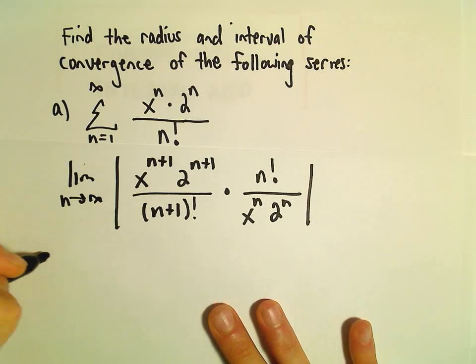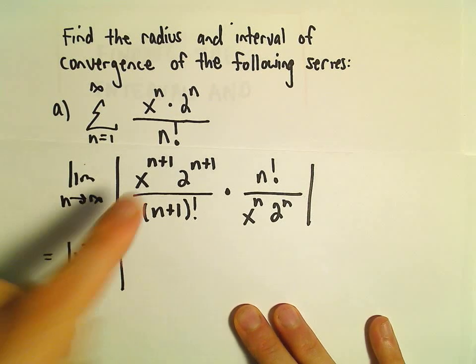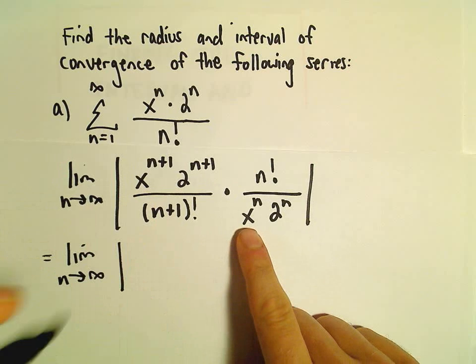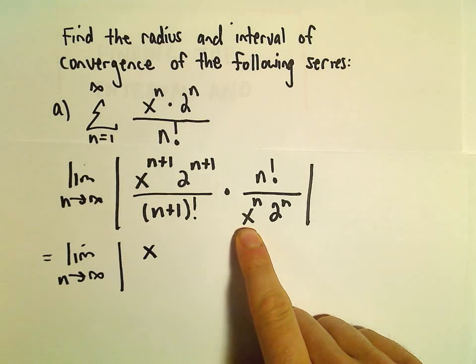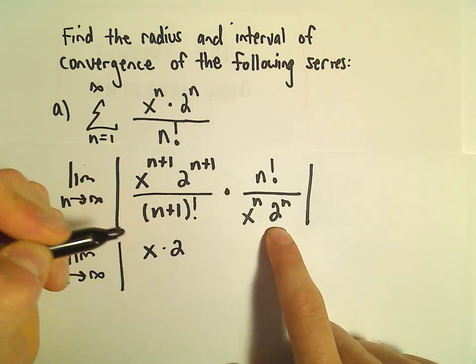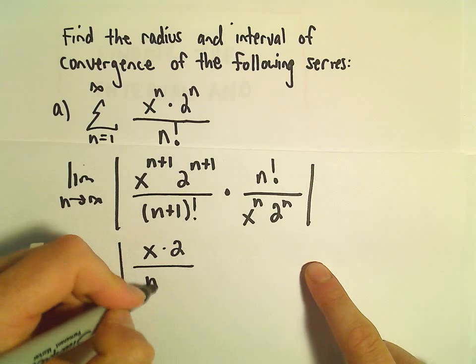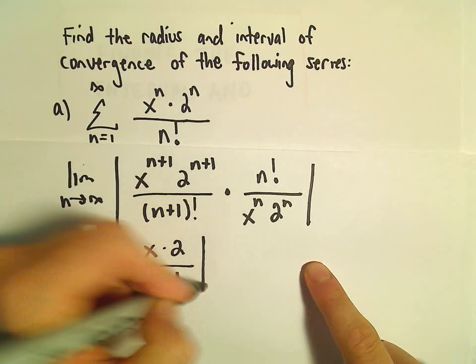If we simplify here, we've got the limit as n goes to infinity. x to the n plus 1 over x to the n is going to leave us with x to the first. 2 to the n plus 1 over 2 to the n is going to leave us with a 2. And then n factorial over n plus 1 factorial is going to leave us with n plus 1.